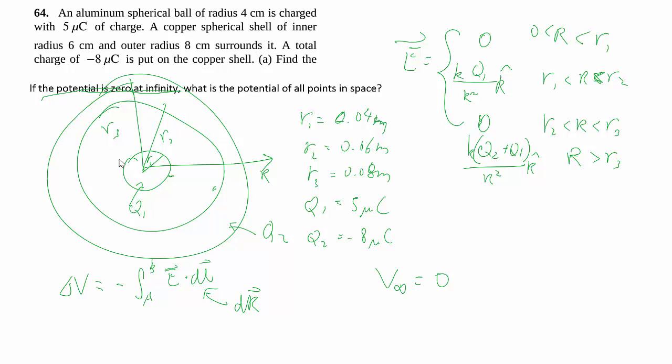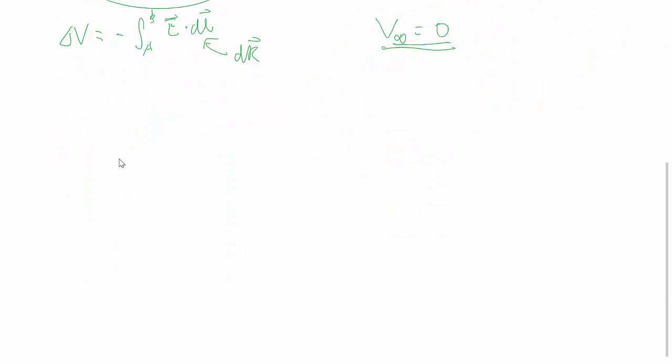In this case, to find for all space, we're going to work from the outside in instead of the inside out, because the definition is at the very edge of the universe, the potential is zero. And because we have this piecewise function, we're going to have to do each piece separately.